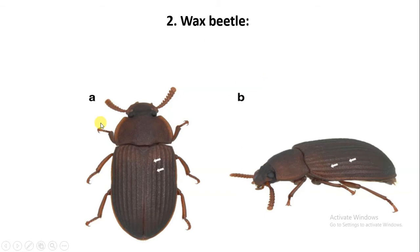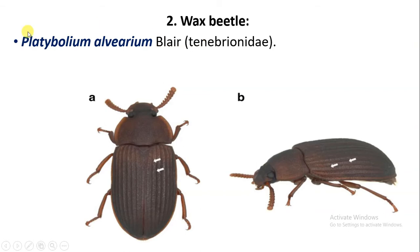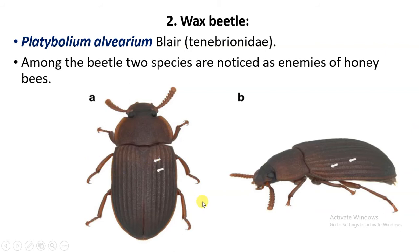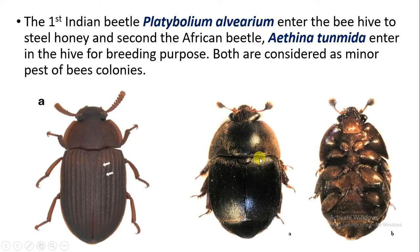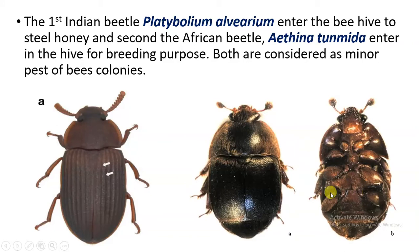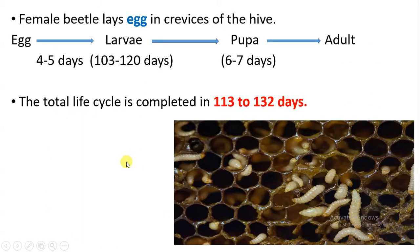The next enemy is the wax beetle. The wax beetle's scientific name is Platybolium alvearium. There are two species of wax beetle that are enemies of the honeybees: the first is Platybolium alvearium and the second is Aethina tumida. Platybolium alvearium steals honey, while Aethina tumida enters inside the hive to lay eggs, and produces larvae, pupa, and adult — entering for breeding purposes.